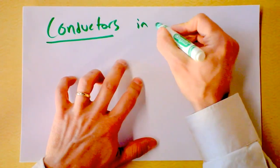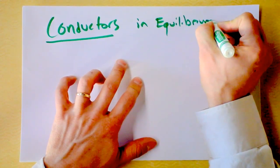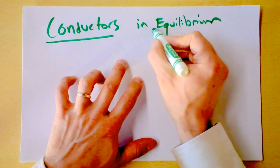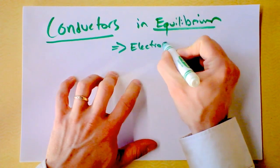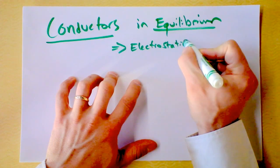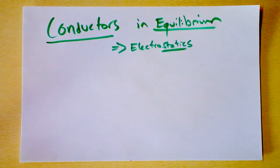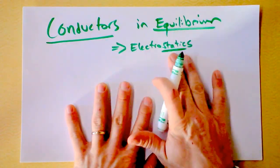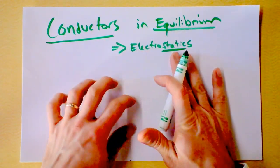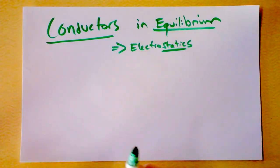Today we're going to talk about conductors in equilibrium. That means we're talking about electrostatics — charges are going to be moving, but we're calling it statics, as in not moving. What I mean is that if a conductor is in equilibrium, then the charges are not inclined to move. The charges in that conductor are happy being right where they are. And there are four things that happen to a conductor when it's in equilibrium.